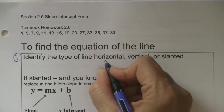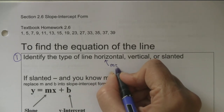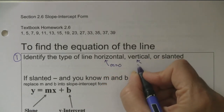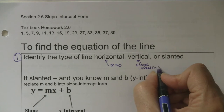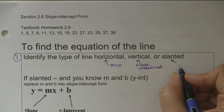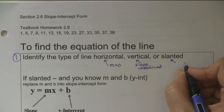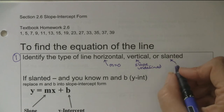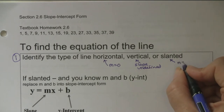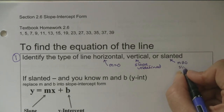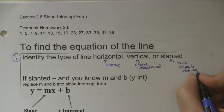You can tell by the slope, or if they gave you a picture of it. Horizontal lines have slope zero. Vertical ones have slope undefined. Slanted ones have any number other than zero - the slope is not zero and not undefined, and then it's slanted.